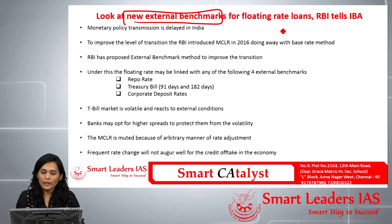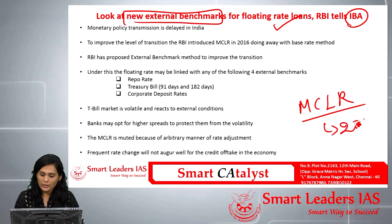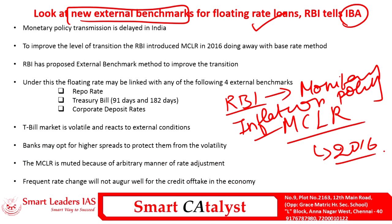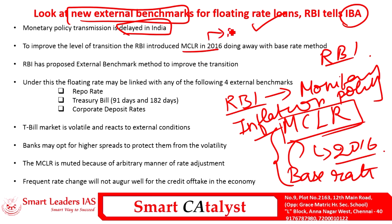The next article is about new external benchmarks for floating rate loans, which RBI is proposing to the Indian Banking Association. This article talks about the new external benchmark rate applicable from this year, replacing the Marginal Cost of Lending Rate (MCLR) which has been in existence since 2016. Before MCLR, a rate called the base rate was implemented, and it was replaced by MCLR in 2016 — a rate below which a bank cannot lend loans to its customers except in cases specifically mentioned by RBI. The MCLR rate is changed every month.